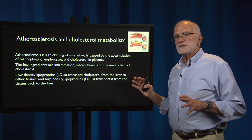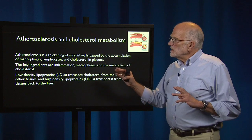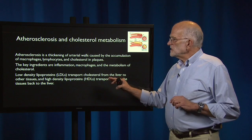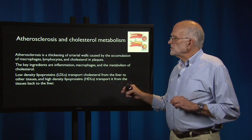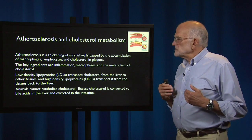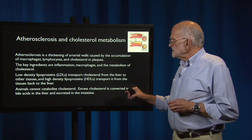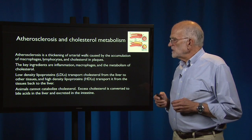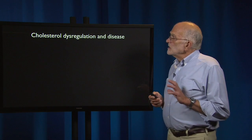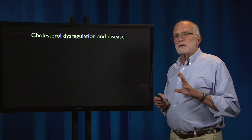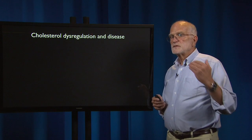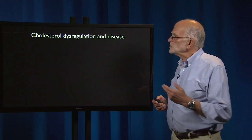There are two kinds of lipoproteins: low density and high density. Low density lipoproteins transport cholesterol from the liver to other tissues, and high density lipoproteins transport it from the tissues back to the liver. Animals like us cannot catabolize cholesterol, so excess cholesterol is converted to bile acids in the liver and excreted through the intestine. Cholesterol is absolutely essential for normal metabolism, but when it is dysregulated — out of homeostatic control — it can produce disease.